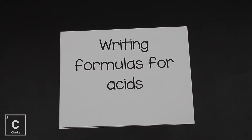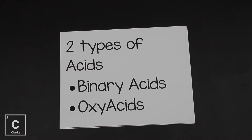Go get your notes, get something to write with, get a periodic table, and let's get started. When we're writing formulas for acids, let's remember that acids are molecular compounds. They are held together with covalent bonds, but since acids begin with hydrogen, they act like an ionic compound. There are two types of acids: binary acids and oxy acids.